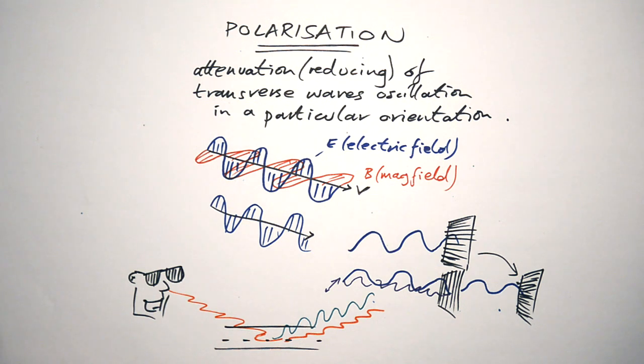Naturally, it's only transverse waves that can be polarized because you try and polarize a longitudinal wave, it's just going to pass straight through the Polaroid filter. Longitudinal waves can't be polarized. It's only transverse waves that can. So there you go. That's my introduction to waves for you. If you think I've missed anything out or if you have any questions, then please put them in the comments below and I'll see you next time.